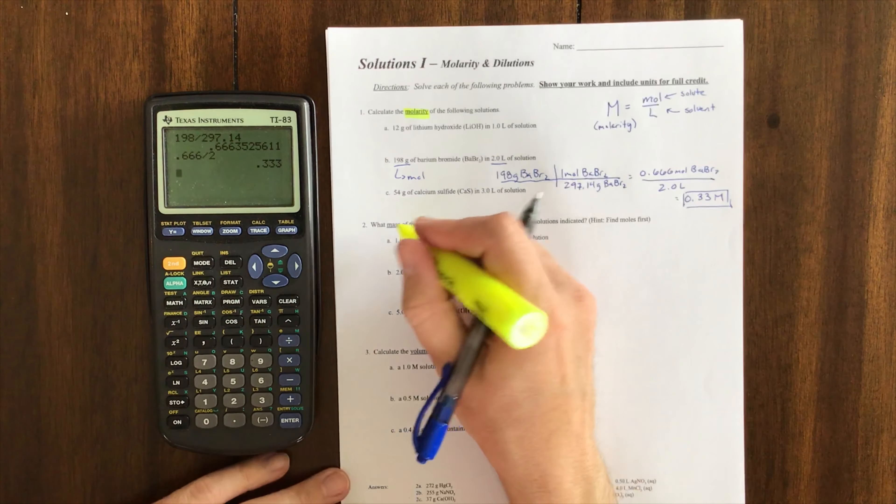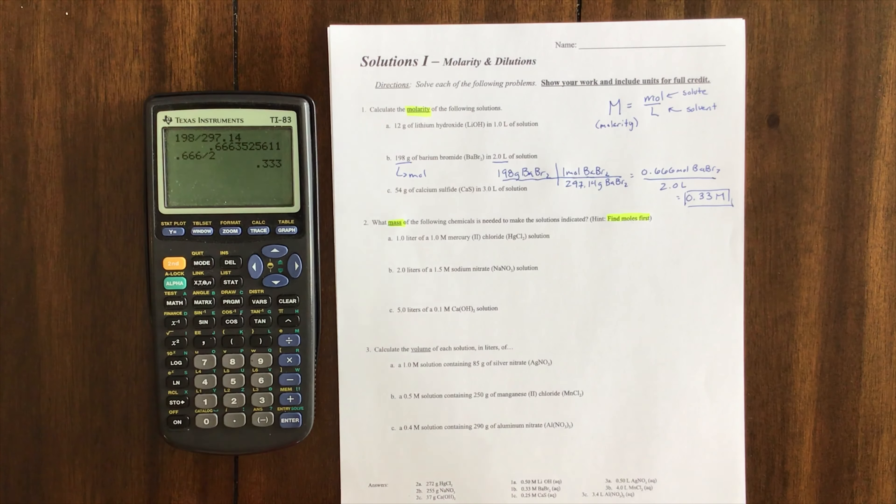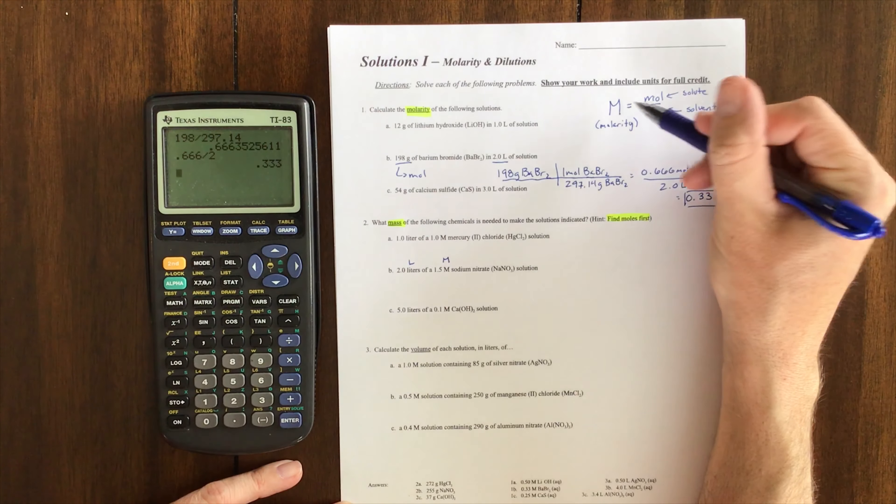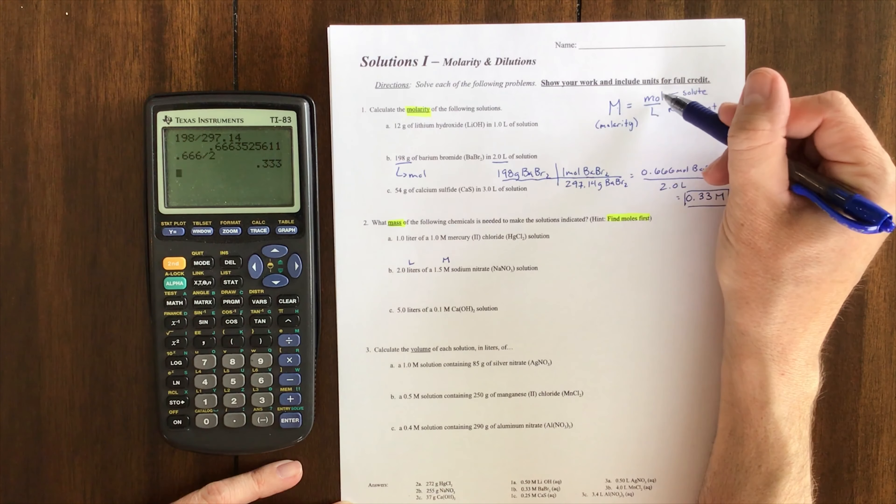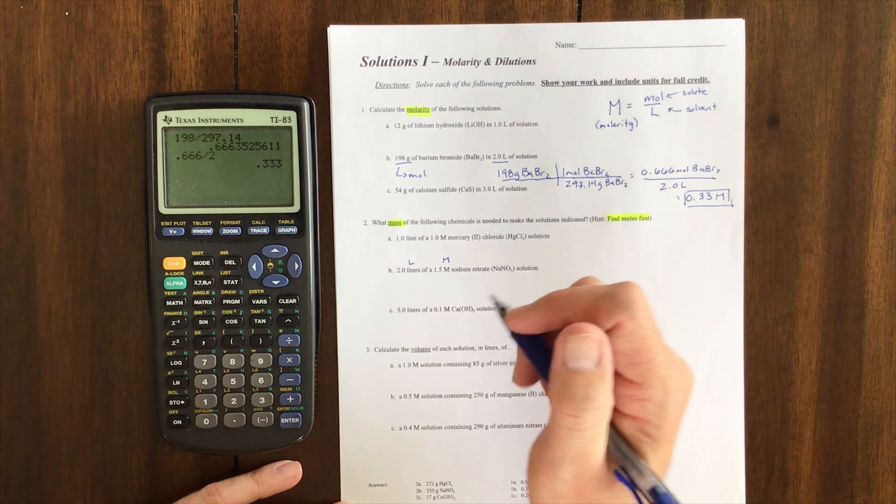Second one: what is the mass? I wrote 'find moles first.' If I do letter B again, I have liters and I have molarity. If I have liters and molarity, the only thing I don't have is moles. So it makes sense—take a breath and go, 'Well, I probably need to find the moles first.'